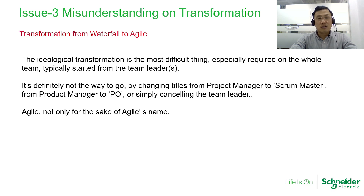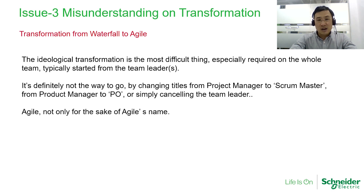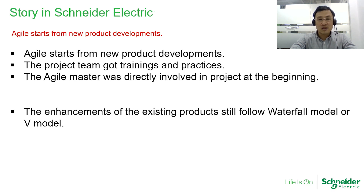The third misunderstanding is about transformation. The ideological transformation is the most difficult thing, especially required across the whole team, and it typically starts with the team leaders. It is definitely not the right way to simply change the title from project manager to scrum master, or from product manager to PO, or just rename the team leader. Agile is not only for the sake of Agile's name — we need to embed Agile's principles into the project, not just change the names.